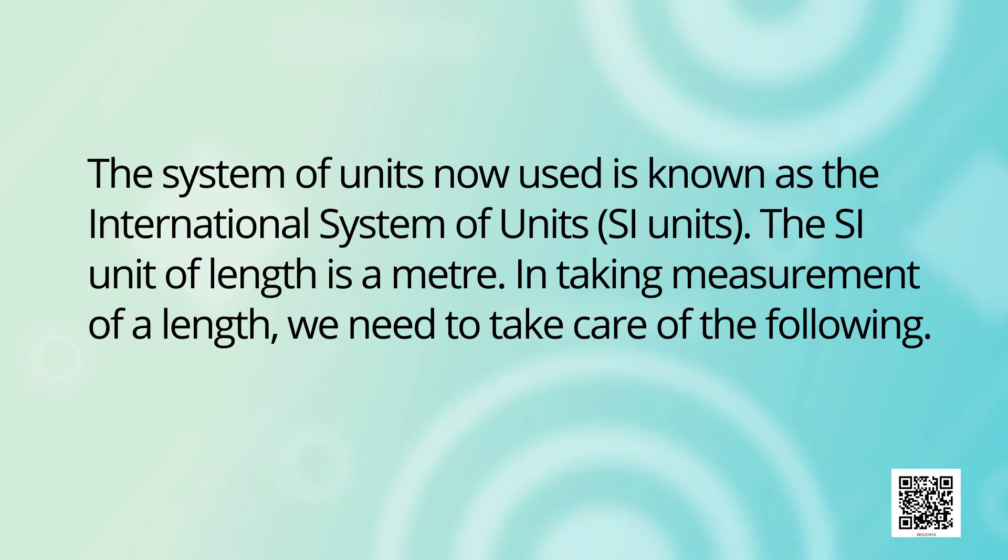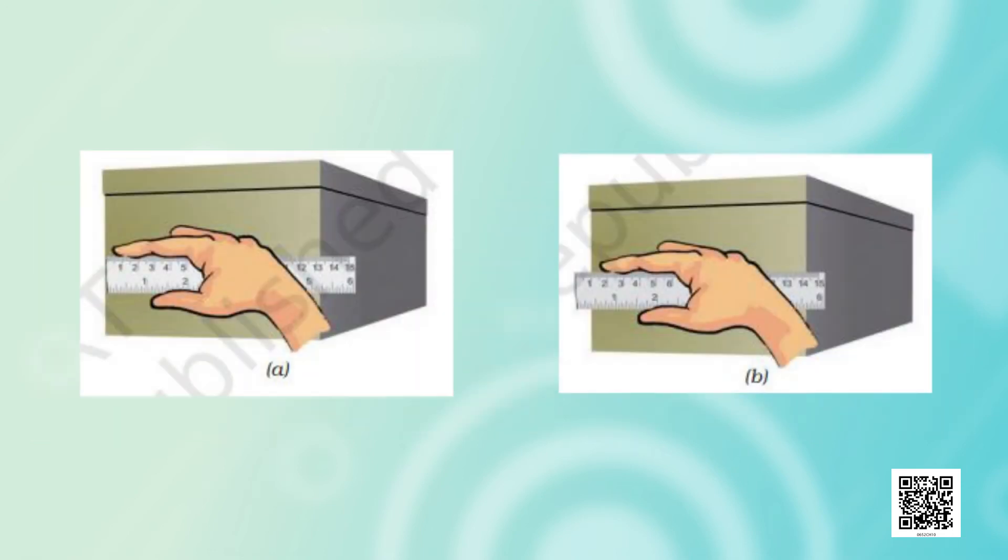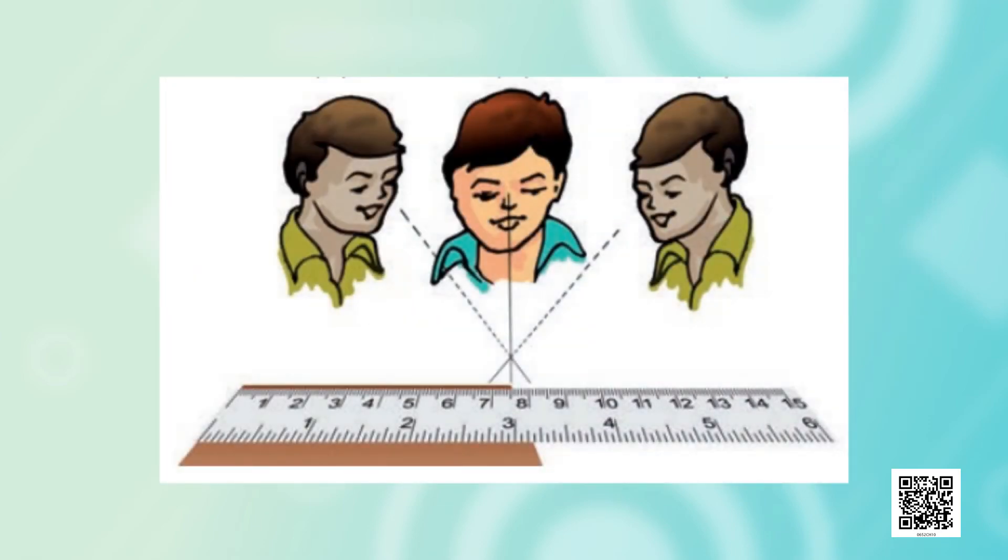In taking measurement of a length, we need to take care of the following. Place the scale in contact with the object along its length. In some scales, the ends may be broken. You may not be able to see the zero mark clearly. In such cases, you should avoid taking measurements from the zero mark of the scale. You can use any other full mark of the scale, say 1, then you must subtract the reading of this mark from the reading at the other end. Correct position of the eye is also important for taking measurement. Your eye must be exactly in front of the point where the measurement is to be taken.